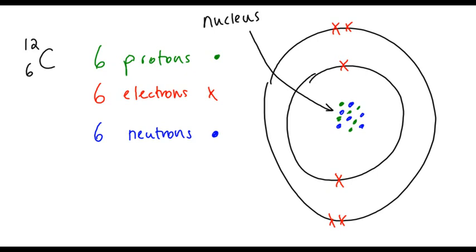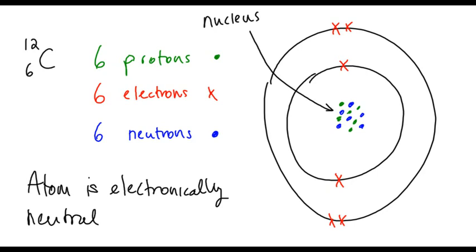And we know that the atom is electronically neutral because the number of protons equals the number of electrons.